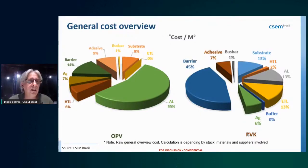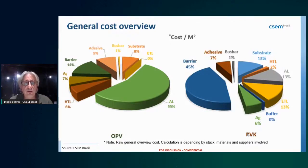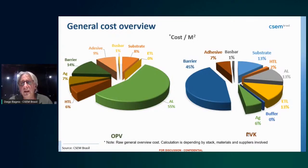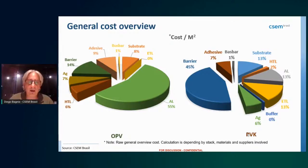For a general cost overview, costs depend on the materials involved and supplier quantities. For OPV, one of the main cost dependencies is the active layer material — more so for R&D-stage materials than for commercial ones. For perovskite, the glass barrier still represents a large portion of total panel cost.